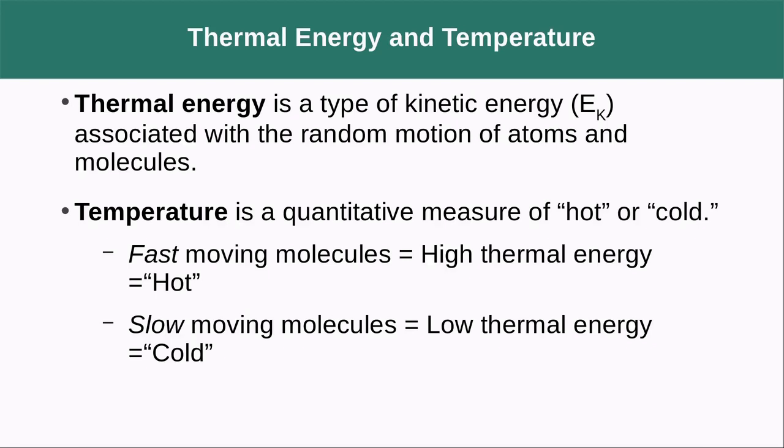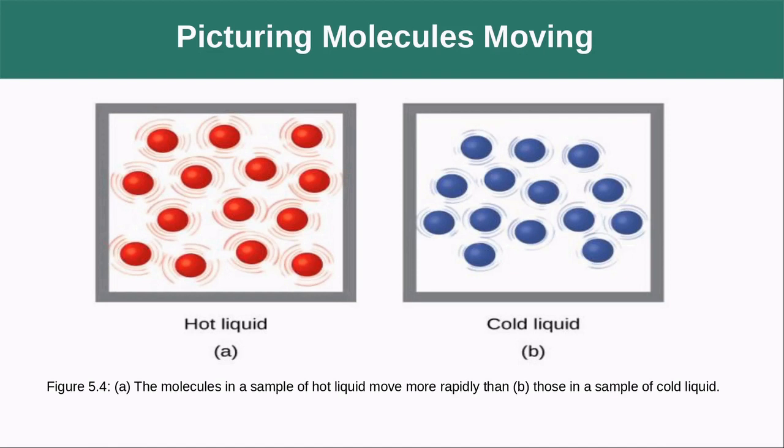Thermal energy is a subset of kinetic energy, associated with the random motion of atoms and molecules. Temperature is the quantitative measure of this thermal energy. If something is hot, it has high thermal energy and the particles are moving really fast. If it's cold, it has low thermal energy and the particles aren't moving very much. In a hot liquid, particles are vibrating rapidly, while in a cold liquid they're closer together and vibrating much less.